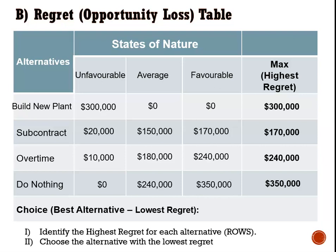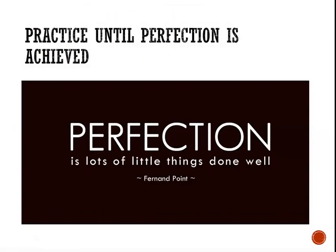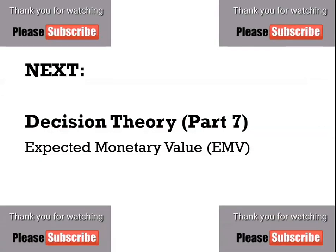The last step says choose the alternative with the lowest regret. New plant regret can go as high as 300,000; subcontract as high as 170,000; overtime as high as 240,000; do nothing as high as 350,000. The lowest is 170,000, which means we would choose to subcontract under the min-max regret criteria. As usual, practice until perfection is achieved — and as the saying goes, perfection is a lot of little things done well. Please subscribe and like, and our next video will be part seven, which looks at expected monetary value.